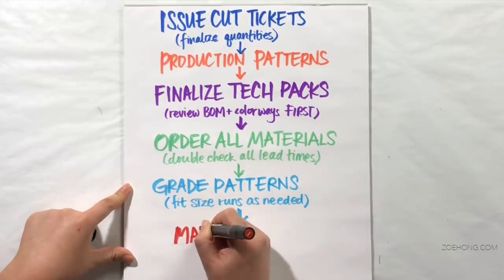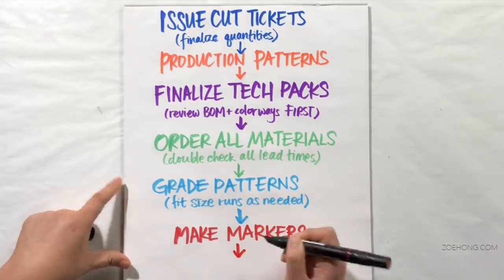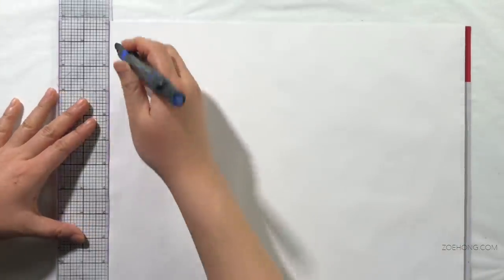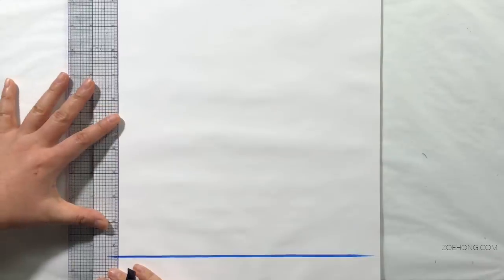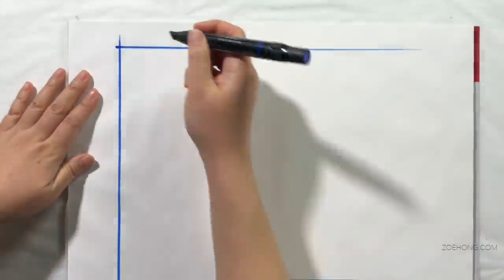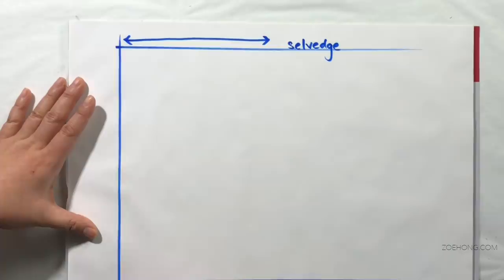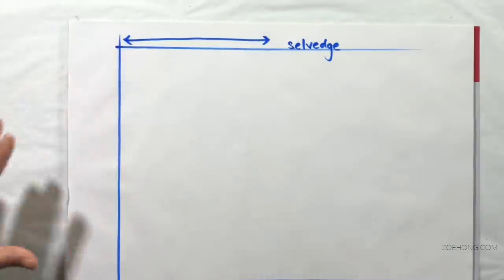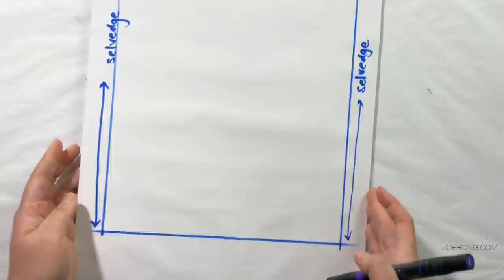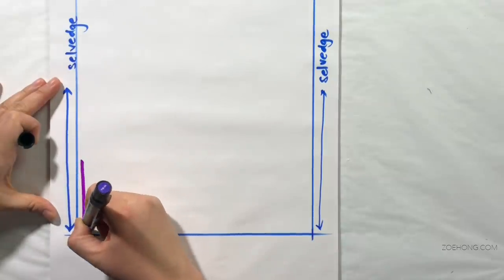Next step is to make your markers. A marker in the world of garment production is not the thing I'm drawing with, but it is a giant sheet of paper with the pattern pieces drawn on top. And then you lay this giant piece of paper on top of your layers of fabric, and then you cut all your layers of fabric with a giant vertical knife using that sheet of paper as a guide. The marker must be the same width as the fabric you're using, with a little margin for the selvedge. And the pattern pieces must be drawn on grain and as tightly packed as possible to eliminate fabric waste.